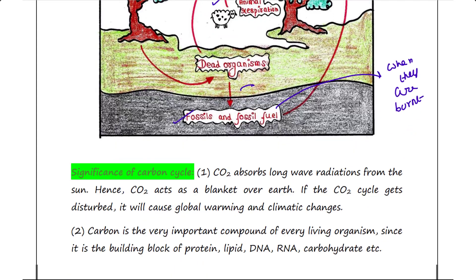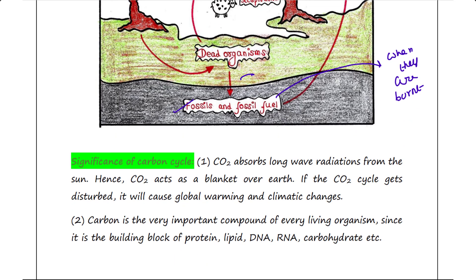Next is the significance of the carbon cycle. First, CO2 absorbs long-wave radiations from the sun like infrared radiation. CO2 acts as a blanket over Earth, and if the CO2 cycle gets disturbed, it will cause global warming because it will increase temperature and bring climatic changes.